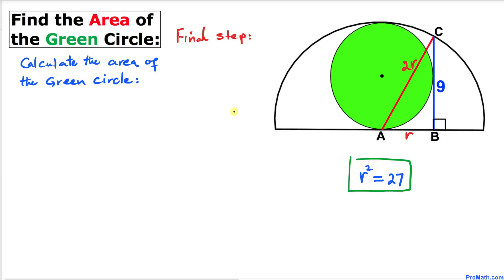Here's our final step. Let's calculate the area of this green circle. Here's the area of a circle formula: A = πr². In our case, r² is 27, so let's fill in the blanks. Area A is going to be π times r², which is 27, so that means area turns out to be 27π.